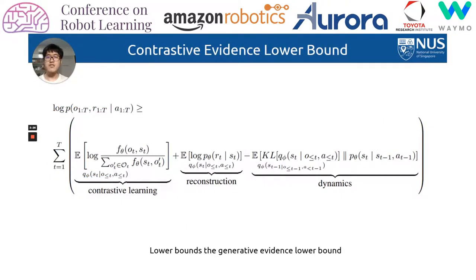To effectively and efficiently optimize the model, we introduce a contrastive evidence lower bound, which mathematically lower bounds the standard generative evidence lower bound used in VAEs. We avoid modeling the observations directly and replace the reconstruction by contrastive learning. For the reward, which is simple to model, we directly predict it.